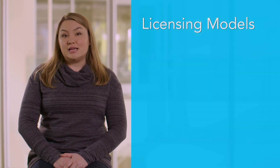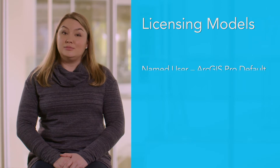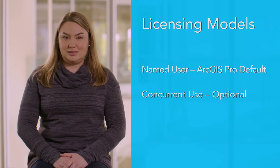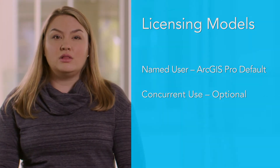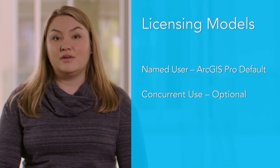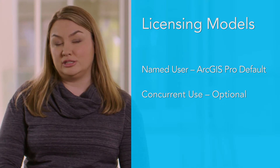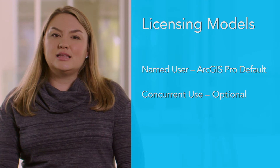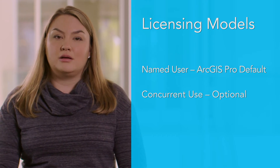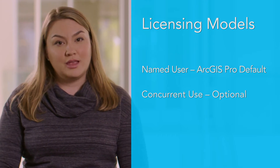There are two licensing models available for ArcGIS Pro: named user and concurrent use. With ArcGIS Pro, the default license model authenticates the software via named users managed through ArcGIS Online. These licenses follow a user identity model, which works well with the rest of the ArcGIS platform. However, the concurrent use option might be a good fit for you if your organization already manages ArcGIS for Desktop licenses via License Manager, or if you have security or firewall requirements.